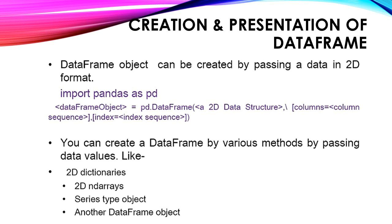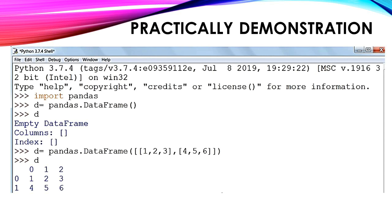A data frame object can be created by passing data in a 2D array. First we import the pandas library: import pandas as pd. The syntax is: df = pd.DataFrame(2D_data_structure, columns=..., index=...). Data frames can be created using different data sources: 2D dictionaries, 2D arrays, series type objects, or another data frame object. Practically, we shall see how to create a data frame.